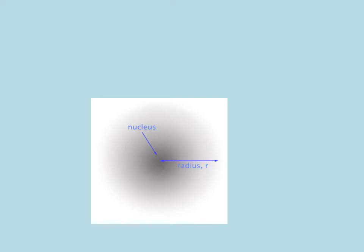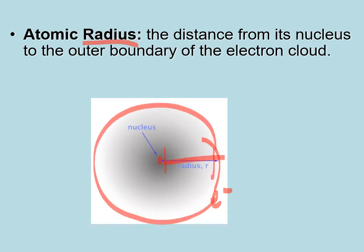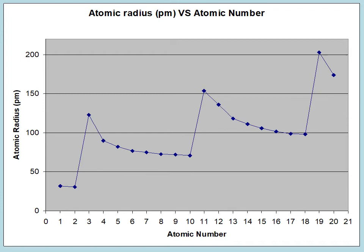Moving up or moving to the right causes the outer electrons to be more attracted to the nucleus. This effective nuclear charge is the cause, and its effects can be seen in four different periodic trends. We'll focus on two today, mention a third, and cover the fourth later. The first trend is atomic radius — the distance from the centre of the atom to where the outer electrons are, essentially the size of the atom.